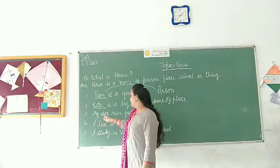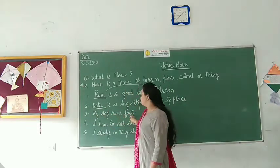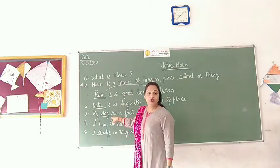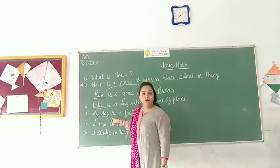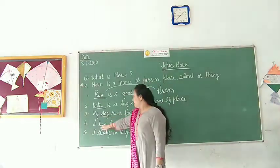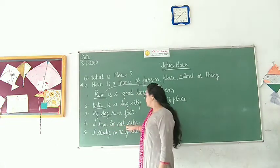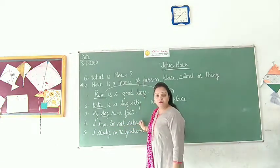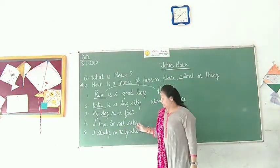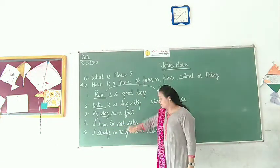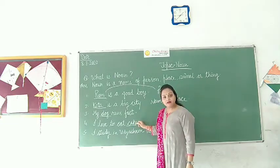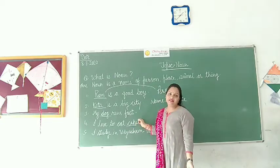My dog runs fast. Dog is the name of an animal, so dog is a noun. I want to eat cake. Cake is a thing, and thing is a noun.